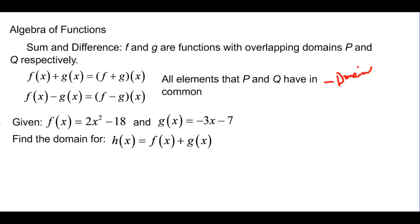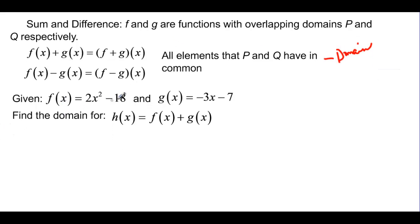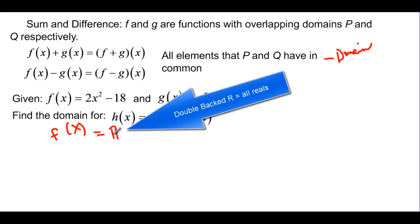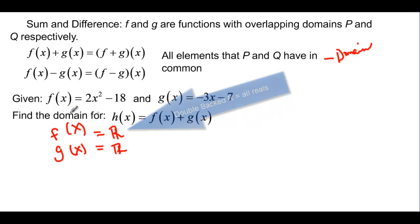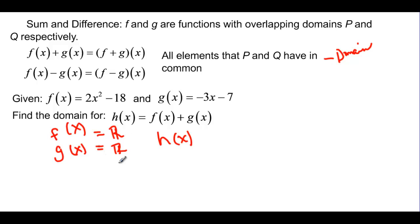Let's try it out. We have f of x equal to 2x squared minus 18, and g of x is negative 3x minus 7, and we want to find the domain. Well, f of x has a domain of all reals. And g of x also has a domain of all reals. This is a quadratic — goes left and right forever. This is a line — goes left and right forever. So the domain of h of x is also all reals, since they have everything in common.